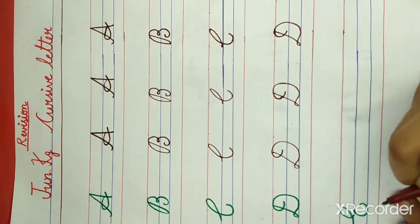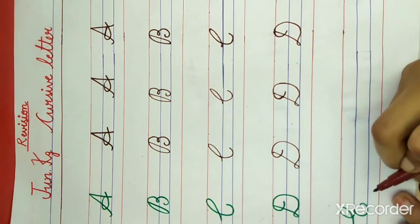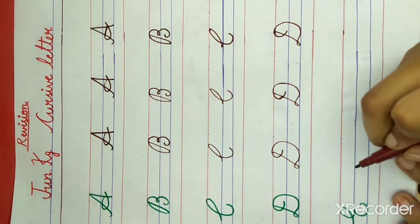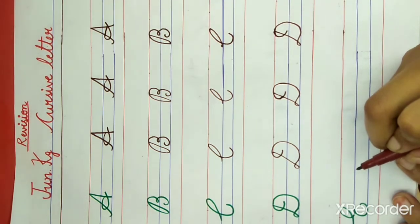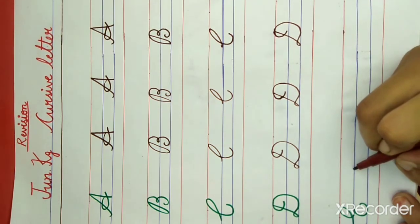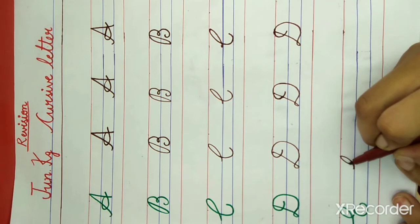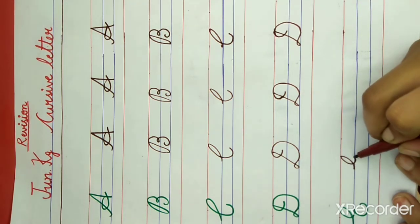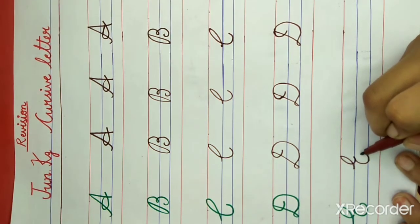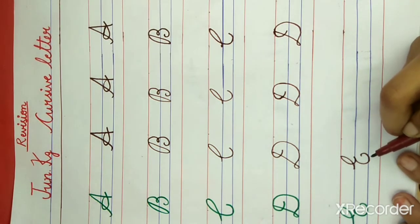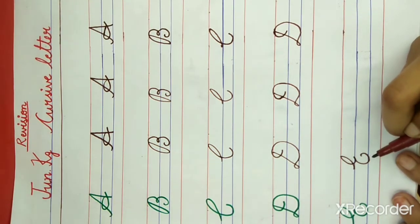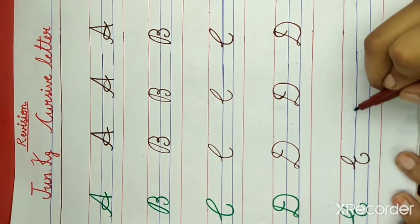Now, E. What is this? E. E for elephant. What is the spelling of elephant? E-L-E-P-H-A-N-T. Elephant. Now put your pencil on the blue line and draw a small curve, again a small curve touching to the blue line, a small semicircle, and leave here. What is this? This is letter E. E for elephant. What is the spelling of elephant? E-L-E-P-H-A-N-T. Elephant.